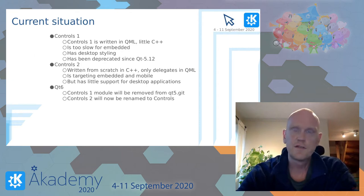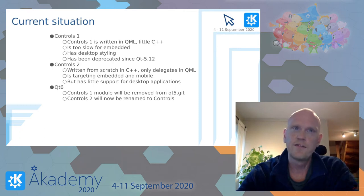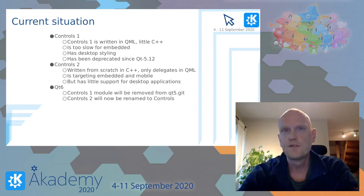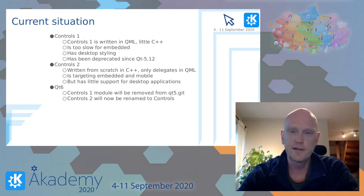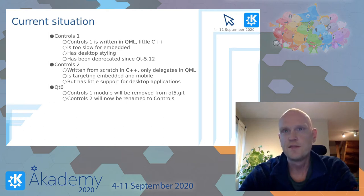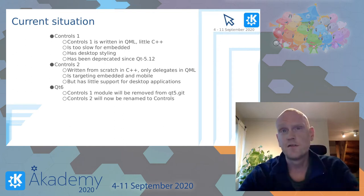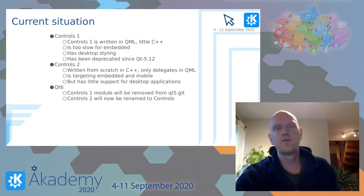In Controls 2, we basically shifted most of the implementation from QML to C++, and we only left the delegates to be written in QML. Everything else, like API, control logic, event handling, and so forth, is done in C++. This reduces memory footprint, gives an easier code flow, and will simply execute faster. We also use file selectors to help resolve the style, which means that we cut off another layer of indirection compared to Controls 1. And Qt 6 will further improve on the style selection logic, so that more can be done during compile time instead of runtime.